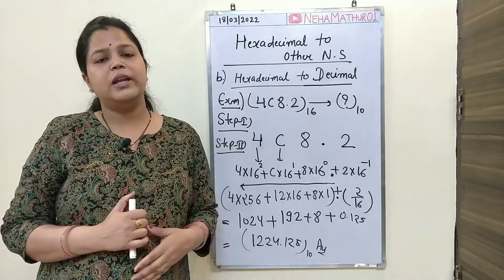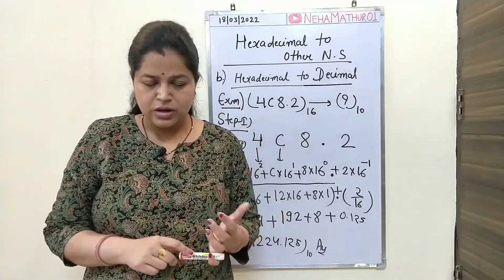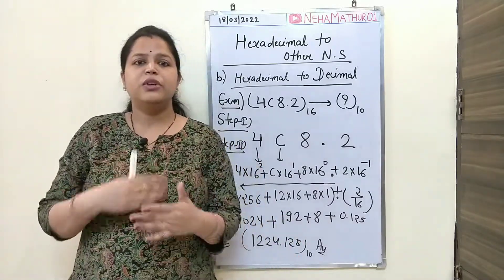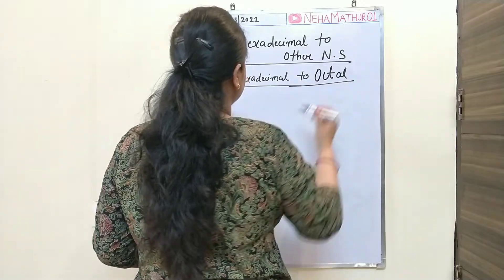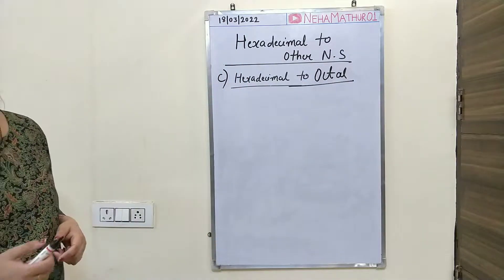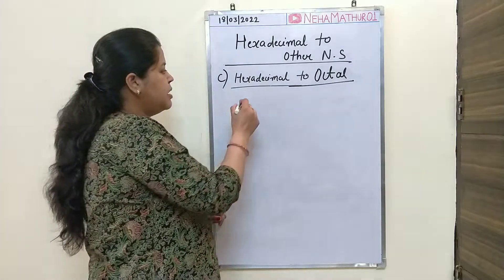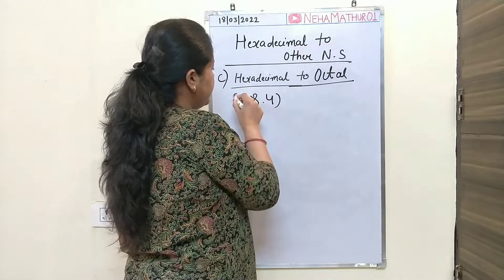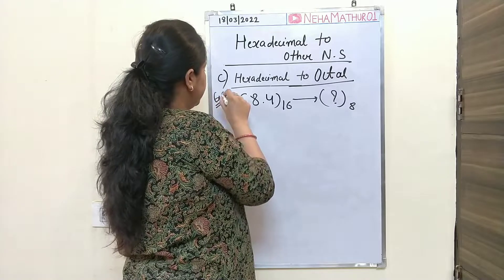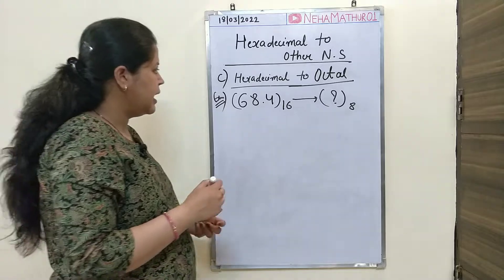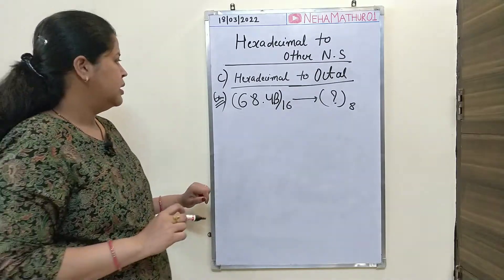Now the last conversion: if you have a hexadecimal number system and want to convert it into octal. The interesting thing is that hexadecimal to octal is the same as octal to hexadecimal, only in reverse direction. I am taking the example 68.4B having base 16, and I want to convert that into octal.